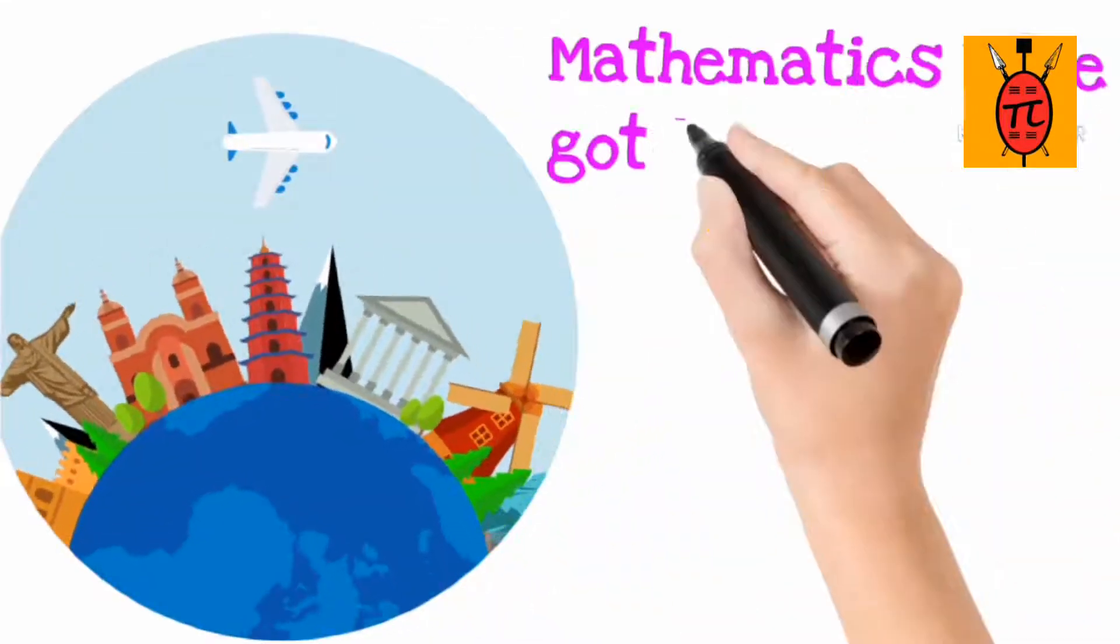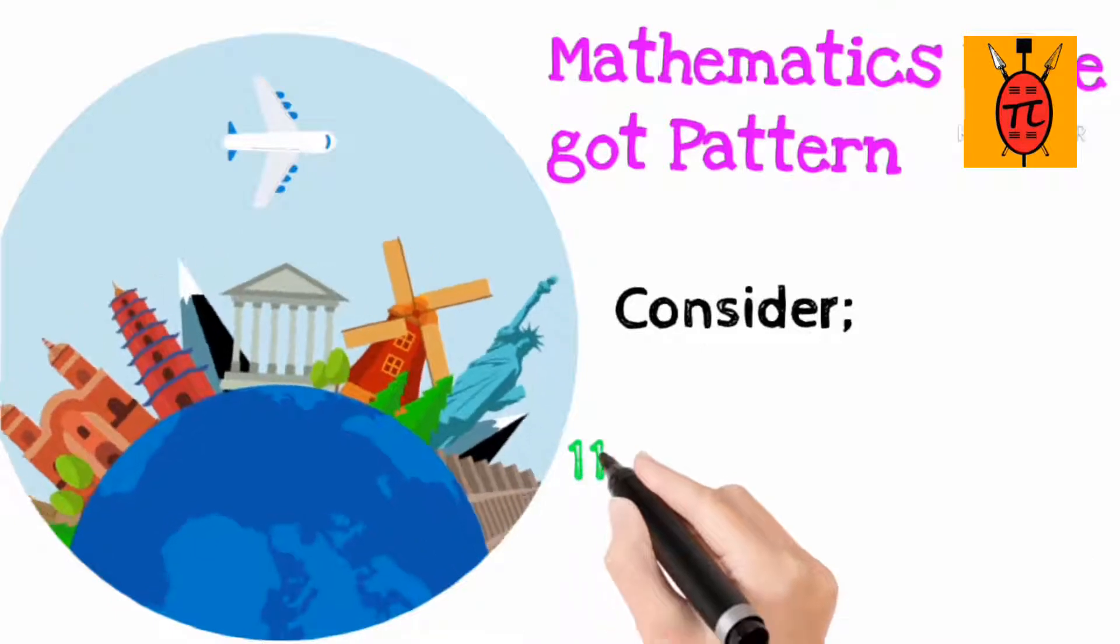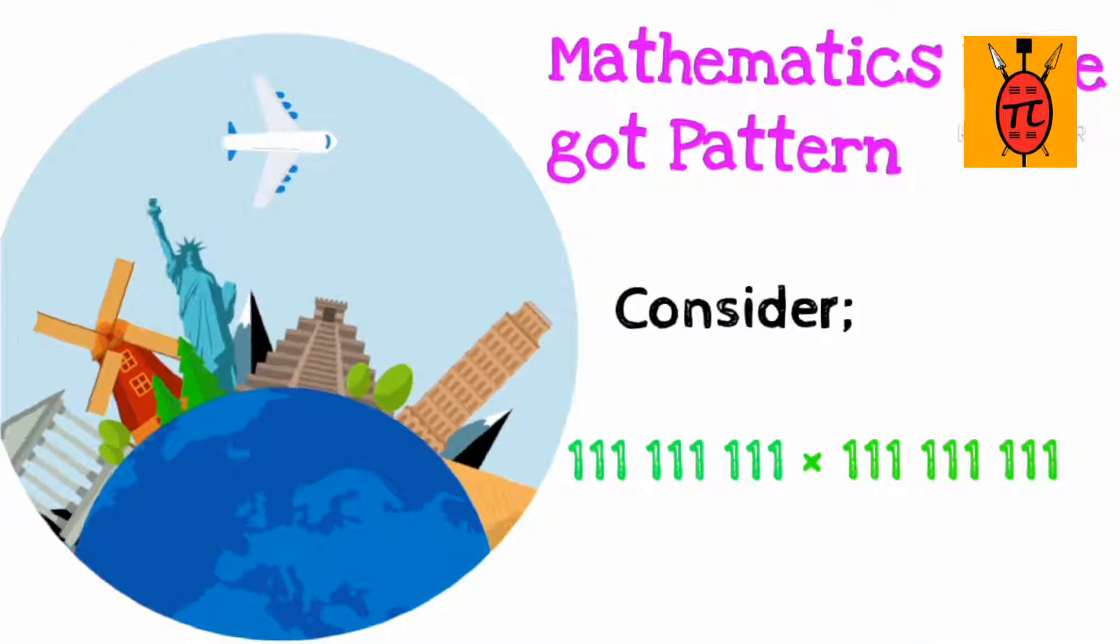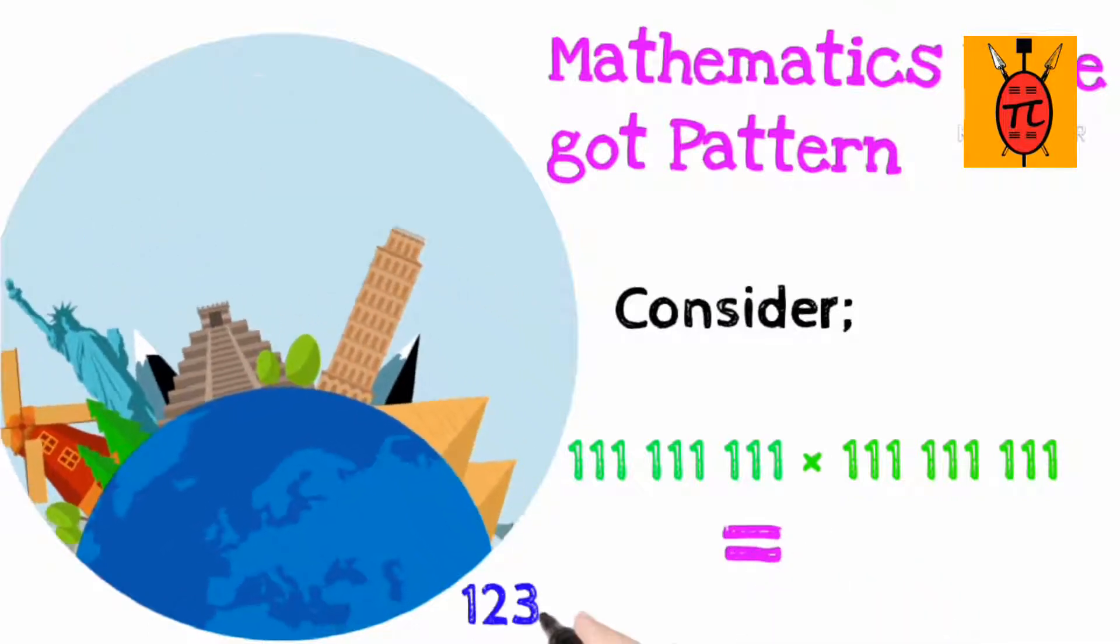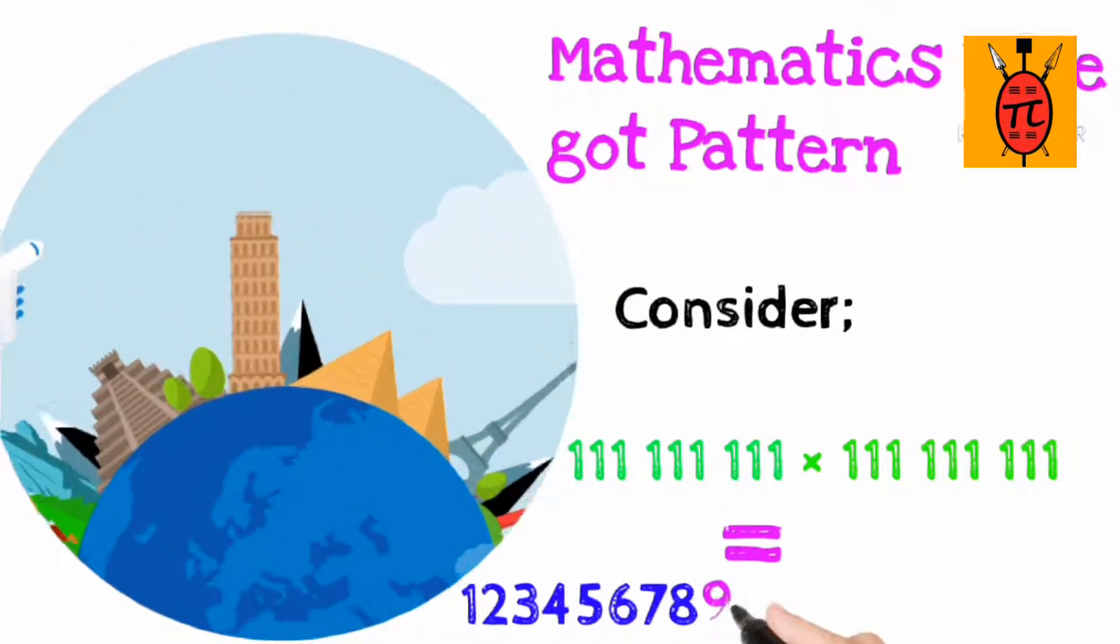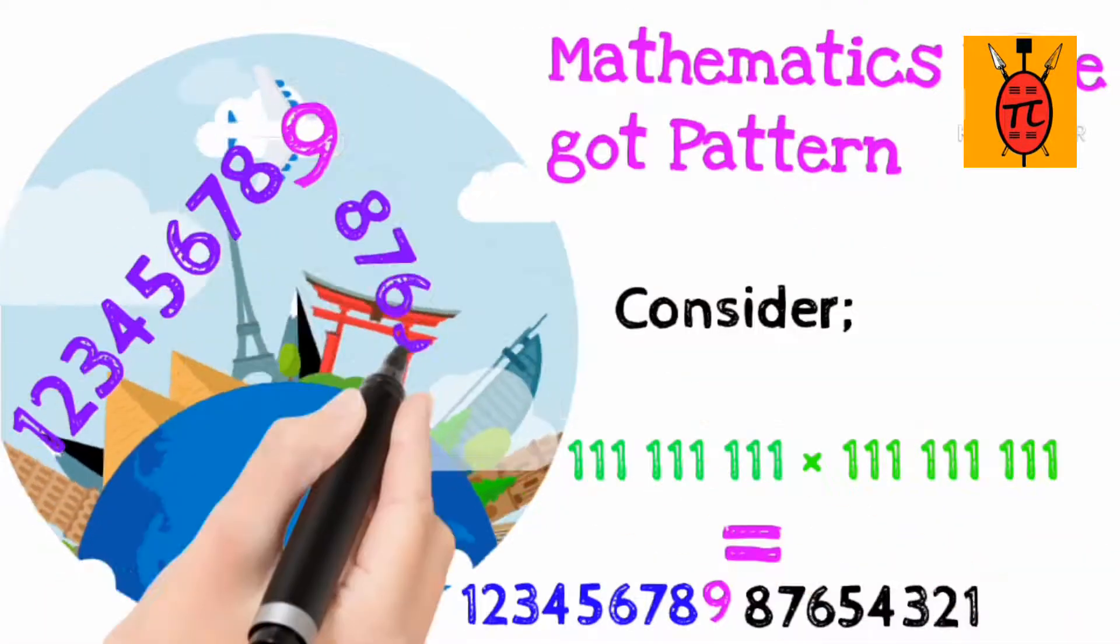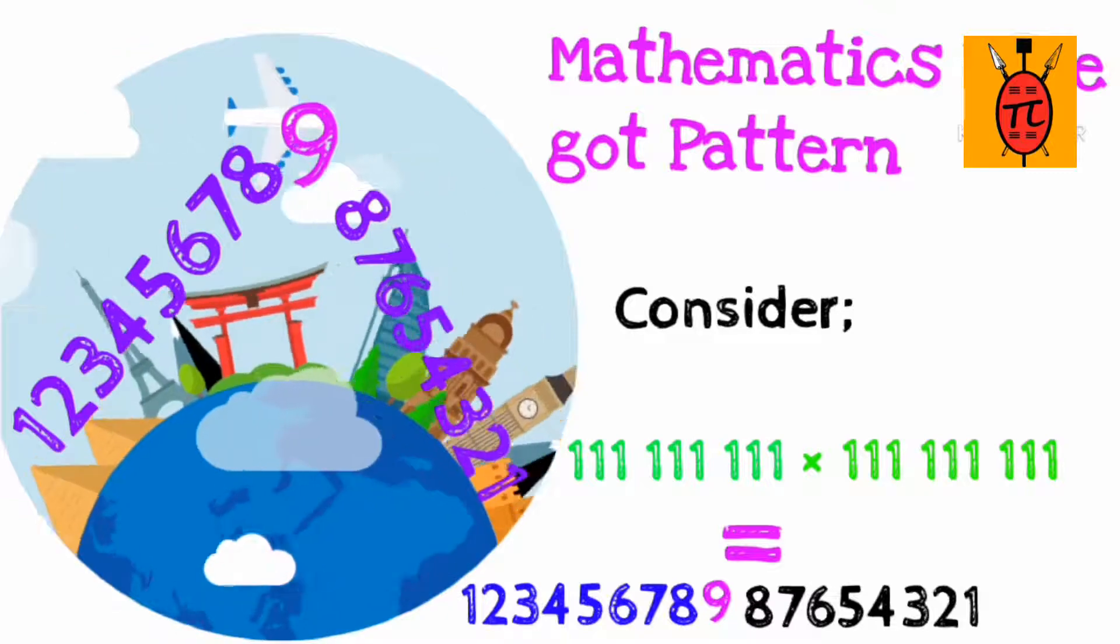Mathematics have got pattern. Consider 111,111,111 × 111,111,111. You will get 123456789876543321. Can you see any pattern? Yeah, there is.